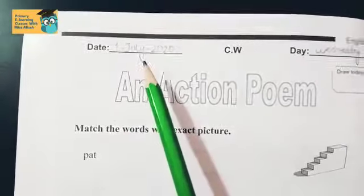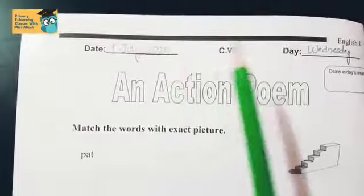What is the date today? 1st July 2020. And what is the day? Wednesday.